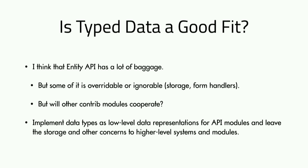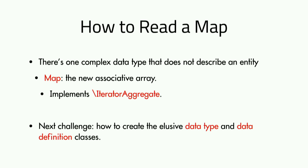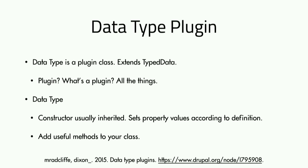It really comes down to the Map class — the one complex data type in Drupal that does not describe an entity. Maps are essentially associative arrays, similar to a hash map. They're iterators, so you can do iteration. You can define properties and apply constraints, making them a bit more than an associative array. Essentially every complex data type I define extends Map because it's so flexible.